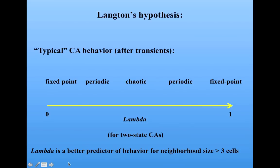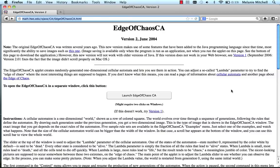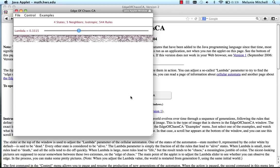Langton did extensive simulations to test his hypothesis and found that lambda tends to be a better predictor of behavior for cellular automata that are not elementary, that is, those with neighborhood size greater than three cells. We're going to look at the relationship between lambda and cellular automaton behavior using an applet that was developed at the math departments of Hobart and William Smith Colleges. This link is also on the course materials page. You can launch the Edge of Chaos simulation.